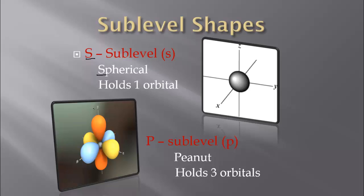Our second sublevel shape is the P sublevel. I like to call it a peanut shape — that way we remember P and peanut. It can hold three orbitals: one peanut shape in each of the three directions — your X, Y, and Z on a 3D plane. So it can hold up to three orbitals.